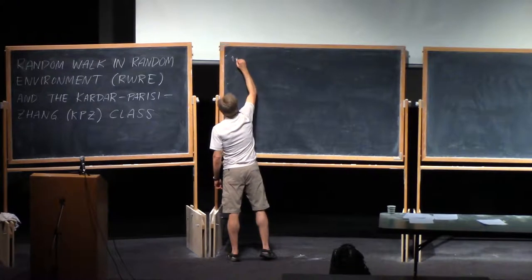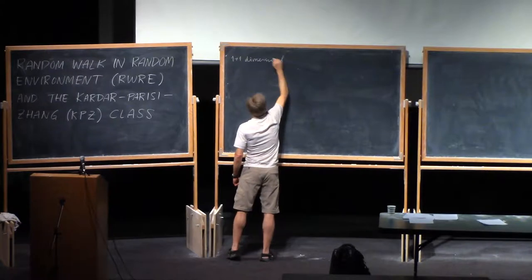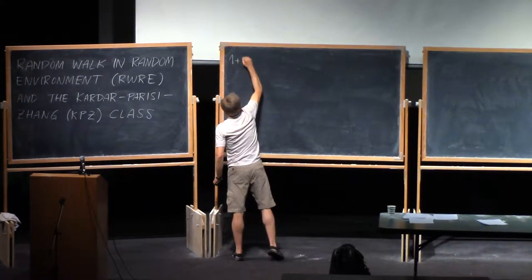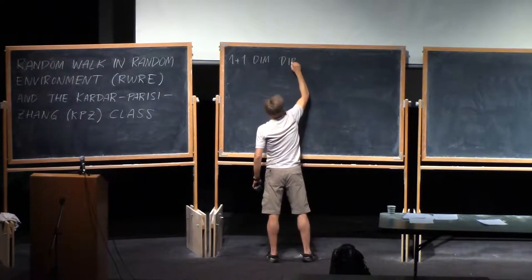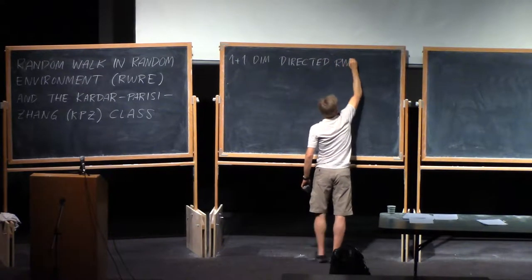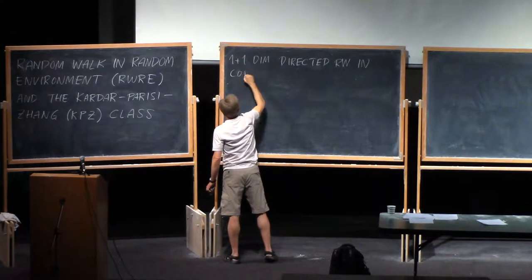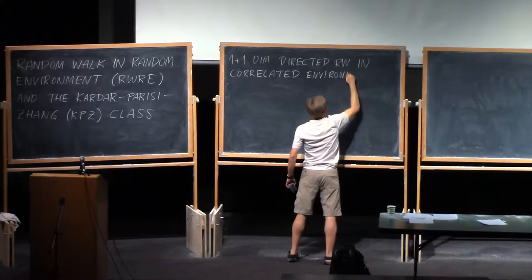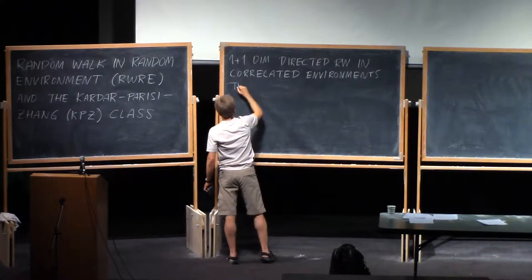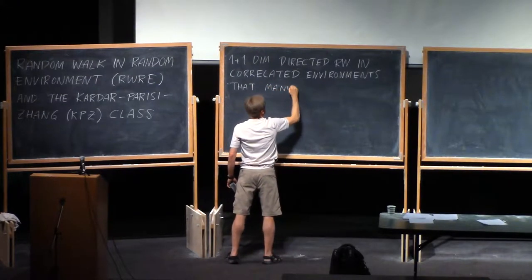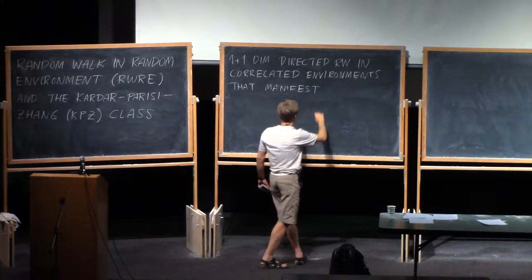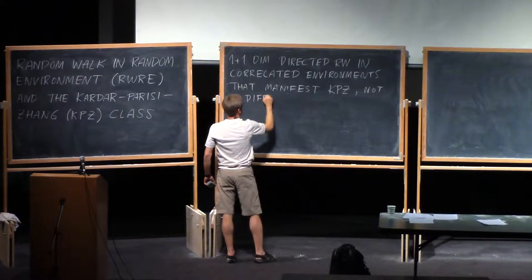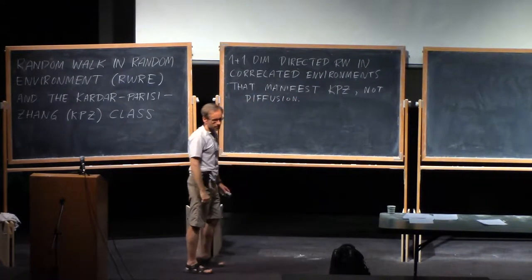So, what this talk is about, it's about one plus one dimensional directed random walks in correlated random environments that manifest KPZ behavior rather than the typical diffusive behavior of random walks. So, there are two examples, or two sources.